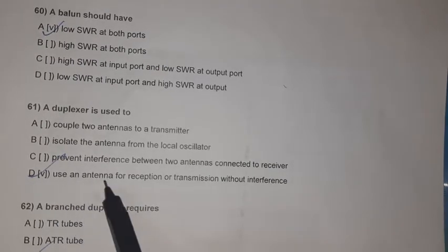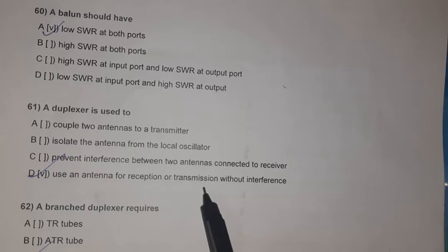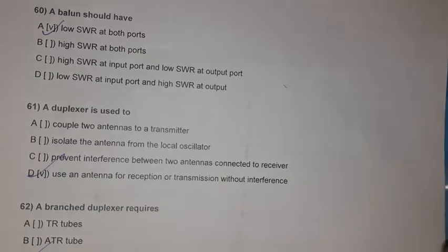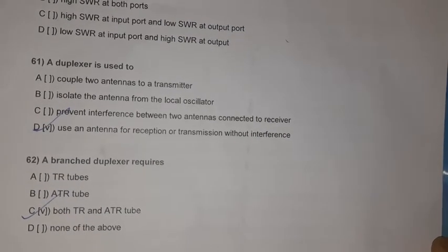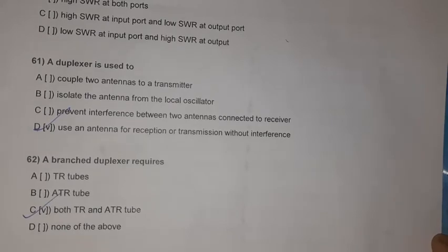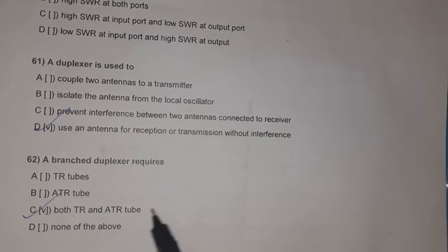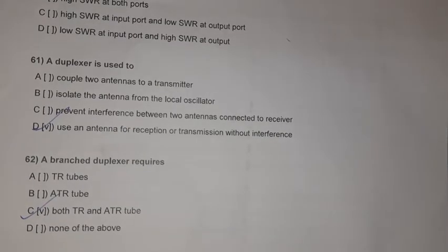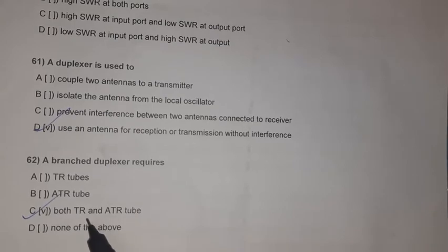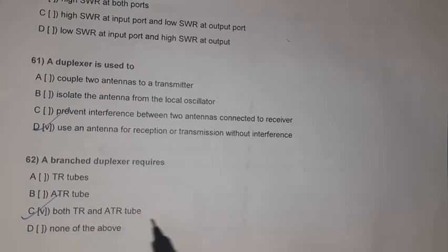Question 59: A duplexer is used to share an antenna for both transmission and reception without interference. Question 60: A branch duplexer requires both TR (transmit-receive) and ATR (anti-transmit-receive) tubes.